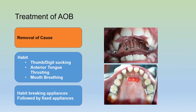How do we treat an anterior open bite? One principle of treatment is to remove the causative factor. In situations where there is a digit, thumb, or tongue sucking habit, or anterior tongue thrusting or mouth breathing habit, the use of habit-breaking appliances to break the habit is followed by the use of fixed appliances to correct the open bite condition.